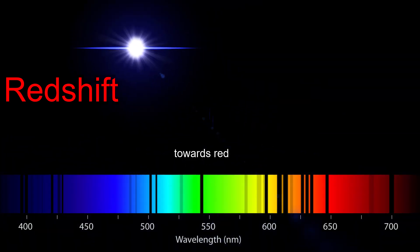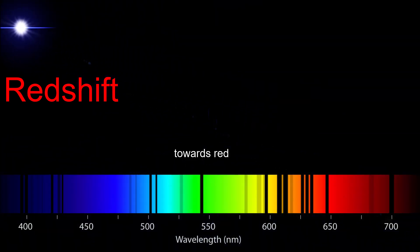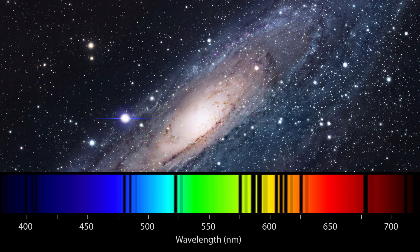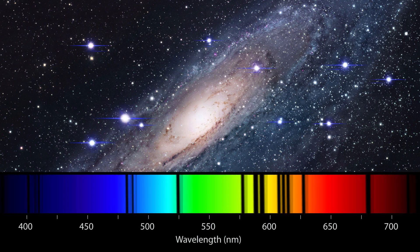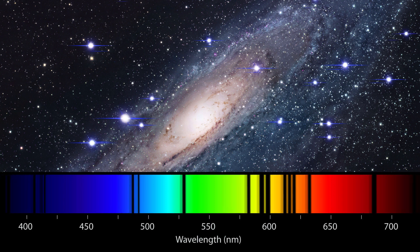Since everything in the universe is moving relative to something else, we can look at light coming from stars in the Andromeda Galaxy and determine if it's moving towards or away from us by detecting shifts in the Fraunhofer lines.